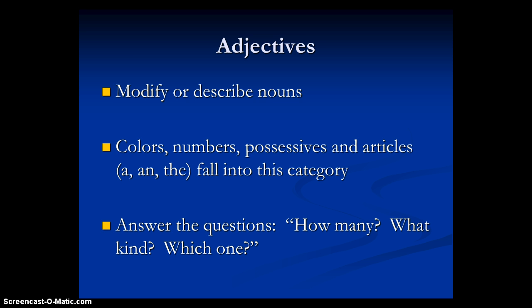We have adjectives. Adjectives modify or describe nouns — describing how a noun is. Some examples are colors, numbers, maybe possessives like 'Jim's car,' or articles like a, an, and the. A good trick: adjectives answer three questions — how many of something, what kind is something, or which one? So words like 'that' are actually adjectives, because saying 'that book' tells me which book you are talking about.